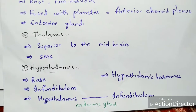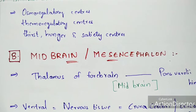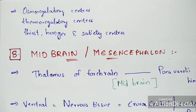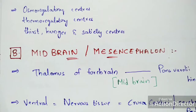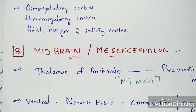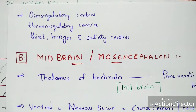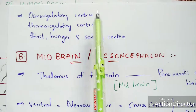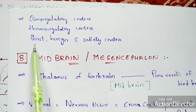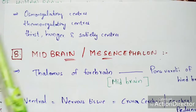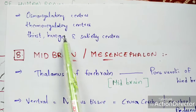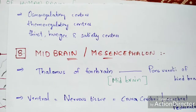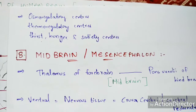The hypothalamus helps in the secretion of hypothalamic hormones. It also consists of several centers: osmoregulatory centers, thermoregulatory centers — which help in sensing temperature such as hot or cold — and thirst, hunger, and satiety centers. All these feelings and sensations are regulated by the hypothalamus region of the brain.